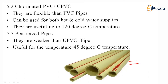CPVC pipes are used to connect solar water heaters to geysers and taps, as they can withstand the higher temperatures without damage. Plasticized PVC pipes are weaker than UPVC and useful only up to 45 degrees Celsius. That covers all the PVC pipe types.